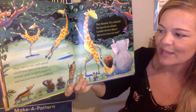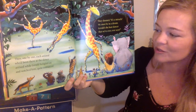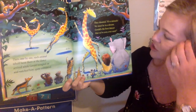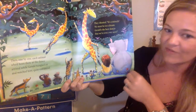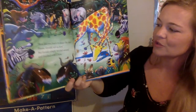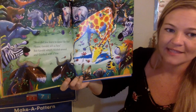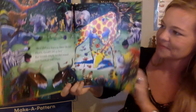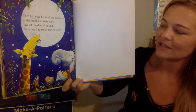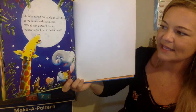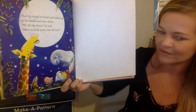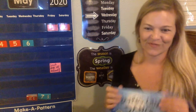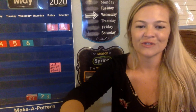Then one by one each animal who'd been there at the dance arrived, while Gerald boogied on and they watched him quite entranced. They shouted, 'It's a miracle! We must be in a dream. Gerald, the best dancer that we've ever seen.' 'How did you learn to dance like that? Please, Gerald, tell us how.' But Gerald simply twirled around and finished with a bow. Then he raised his head and looked up at the moon and stars above. 'We all can dance,' he said, 'when we find music that we love.' Sweet book about African animals — a fiction book about African animals, just for fun. Alright, next on the schedule is journals — you can get your journal notebook out.